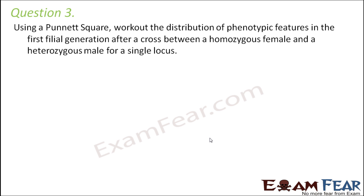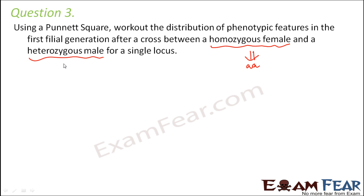Question number 3. Using a Punnett square, work out the distribution of phenotypic features in the first filial generation after a cross between a homozygous female and a heterozygous male for a single locus. Here, we have a homozygous female denoted by AA and the heterozygous male denoted by capital A small a.